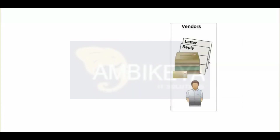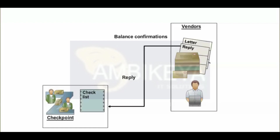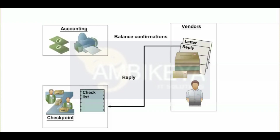The program for creating balance confirmations also creates reply requests for a freely definable number of vendors, a reconciliation list, and a results table. The balance confirmations and reply requests are sent to the vendors. The lists are used as a control measure. The vendors check the balance information they receive and send their replies to the control center audit department, which compares the replies with the reconciliation list and enters the results in the results table.